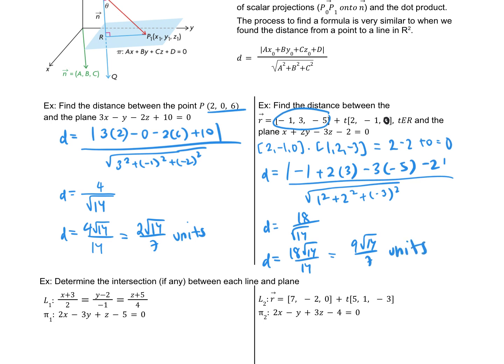Another distance example — this time a line to a plane where they are parallel. If the line were on the plane, calculating the distance would yield 0 because the line is directly on the plane.